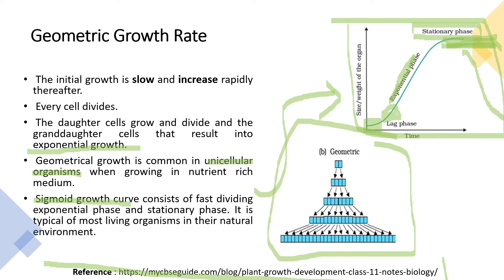A flowchart shows the geometric growth pattern clearly. In the initial phases, growth is very slow, but every cell divides and they increase rapidly. The number of cells dividing increases from the initial stage to the final stage — first two cells, then four, then six, then eight, and then multiple cells.